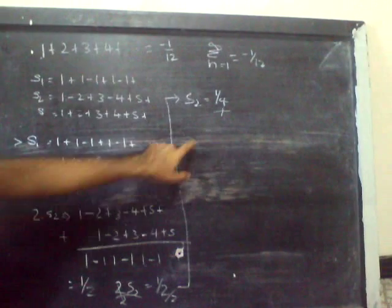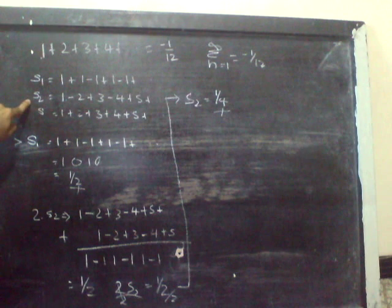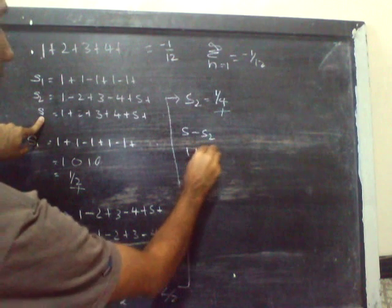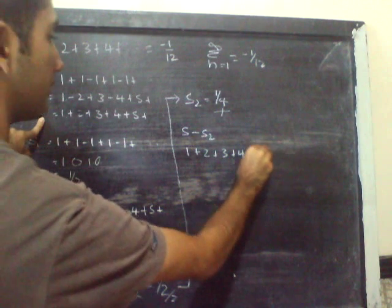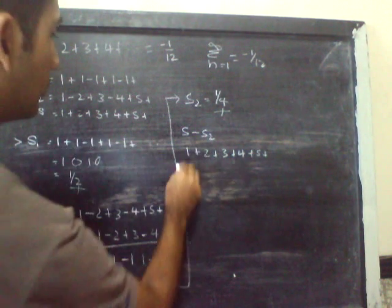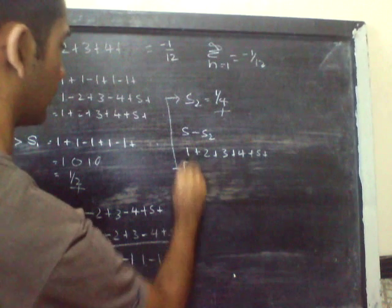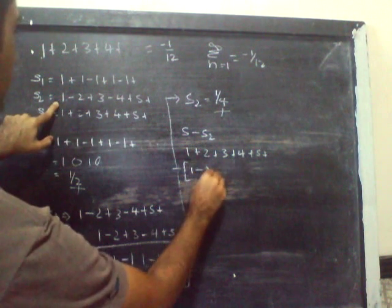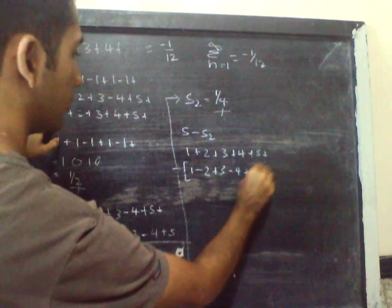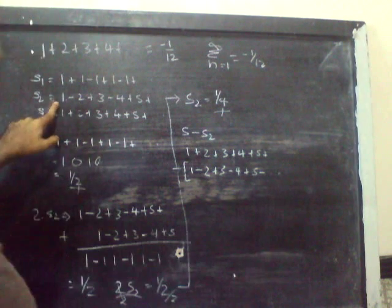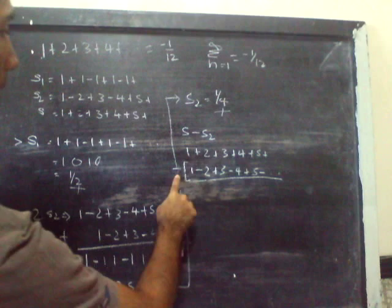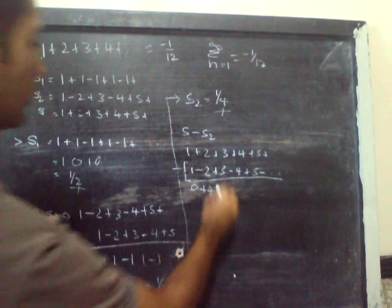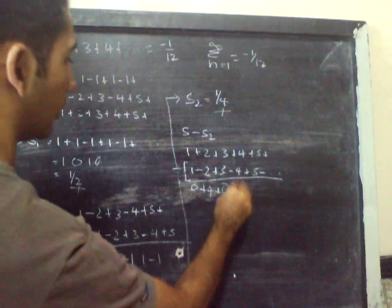I'll do S minus S2. S is 1 plus 2 plus 3 plus 4 plus 5 and so on. S2 is 1 minus 2 plus 3 minus 4 plus 5 and so on. So the answer we get here is 1 minus 1 is 0, 2 minus minus 2 is 4, 3 minus 3 is 0, 4 minus minus 4 is 8.